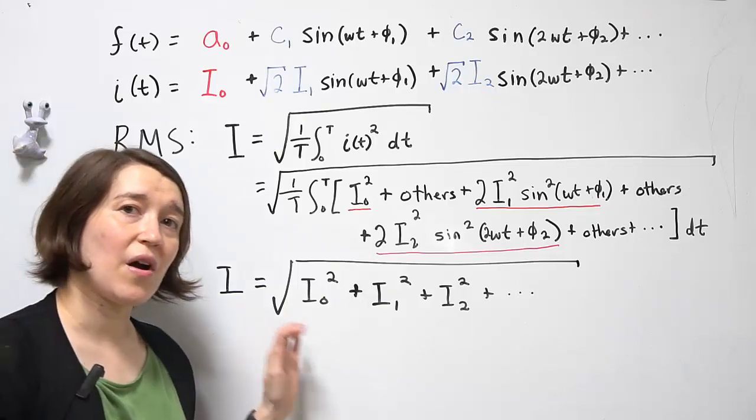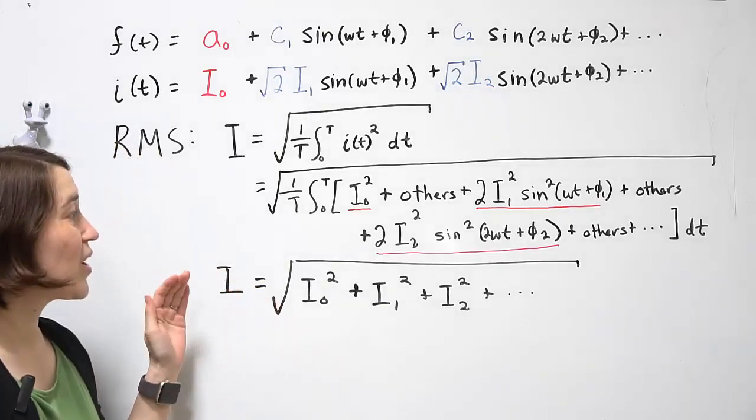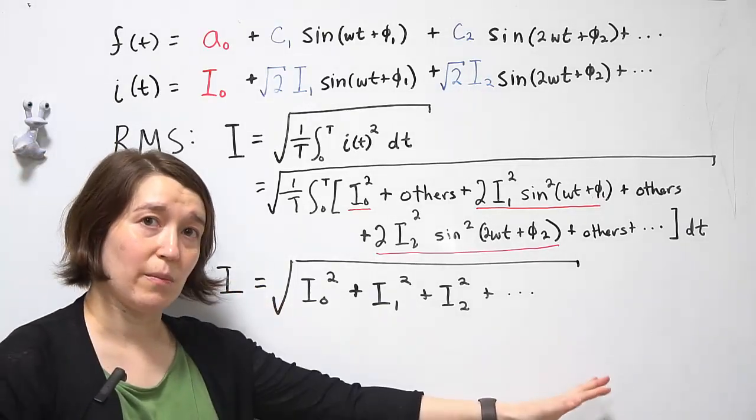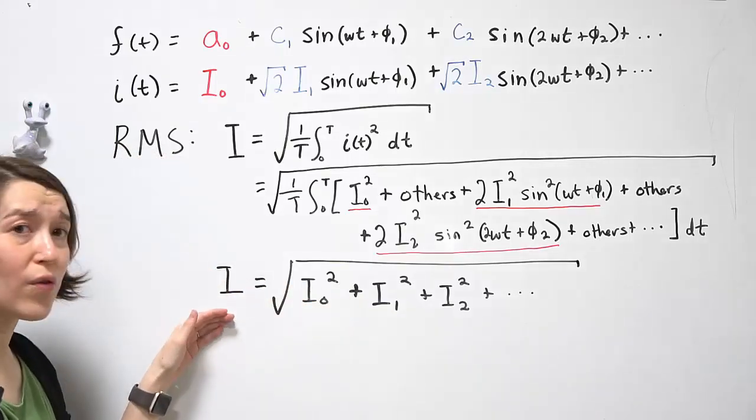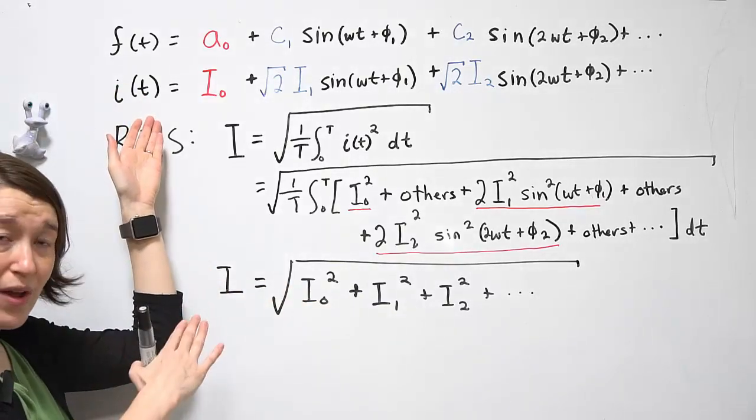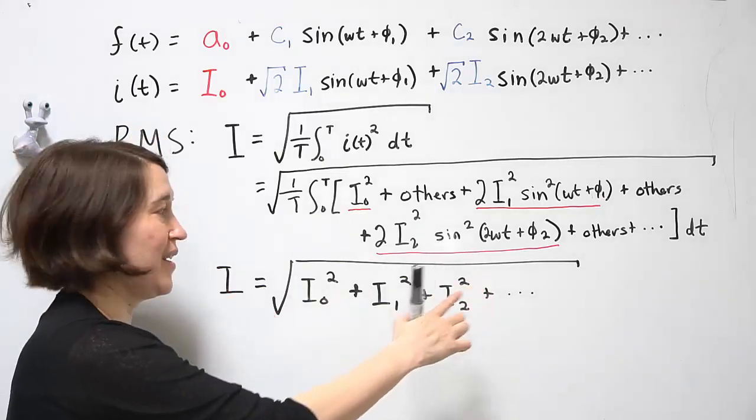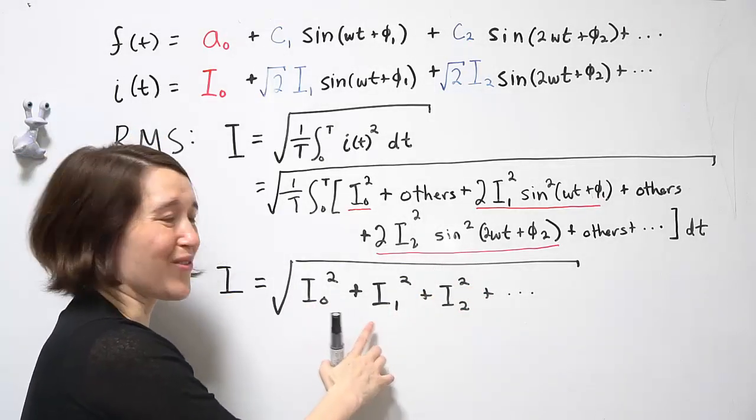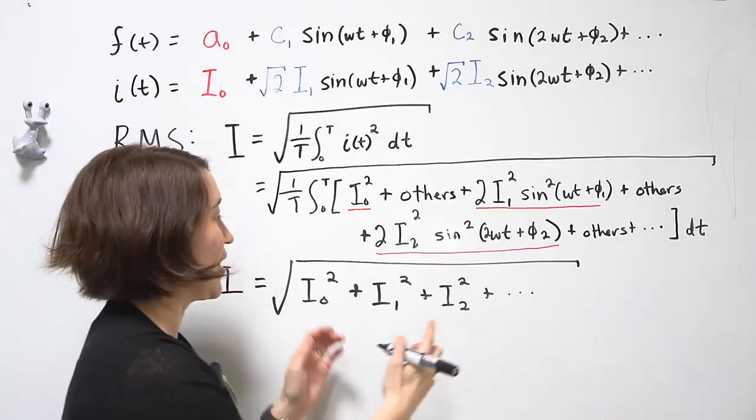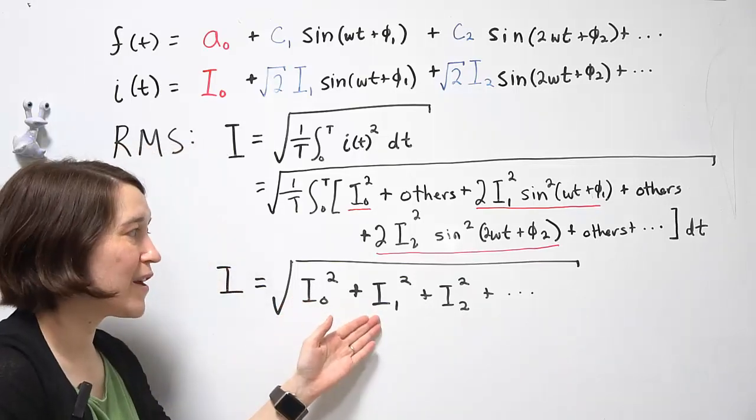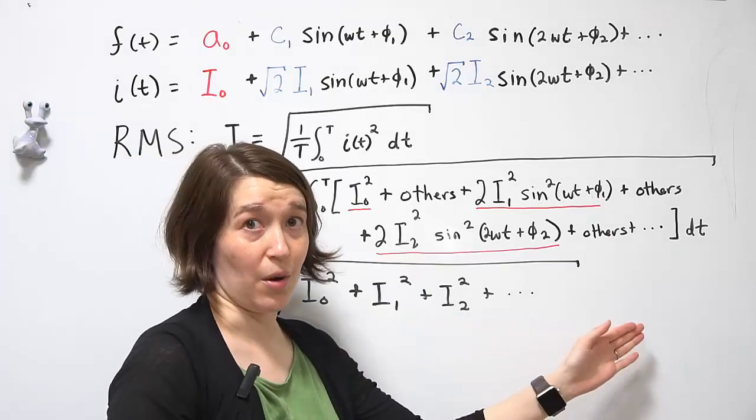So for the RMS value, you can break it down into its individual components. And you'll see the overall RMS value for the full waveform is equivalent to the square root of the sum of squares for each of the components, including the DC value, fundamental, and the higher order harmonics.